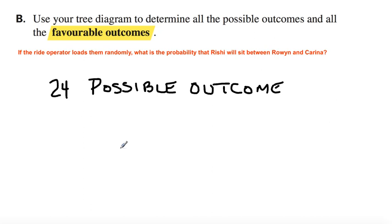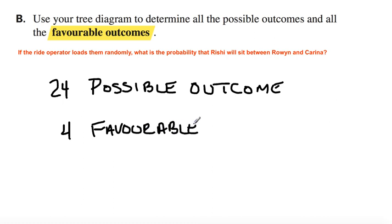But there are only four favorable outcomes. The question was: what is the probability that Rishi will sit between Rowan and Karina? That is your favorable outcome. And of the twenty-four possible outcomes, four of them were favorable to this question. Pause and write that down.